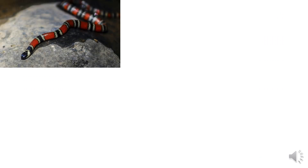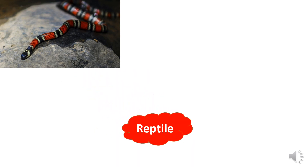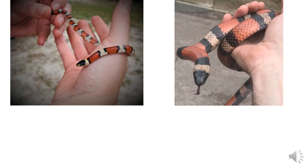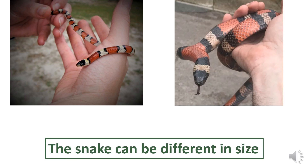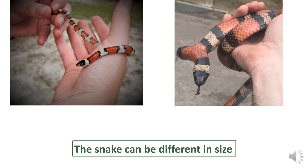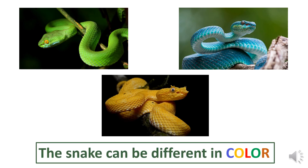Now, look at this animal. What is this? This is the snake and it has scales. So it is a reptile. Let's see — we have a small snake and we have a bigger snake. So the snake can be different in size — it can be small and it can be large. How else can it be different? This snake is green, this one is yellow, and this one is blue. How weird! So the snake can also be different in color.